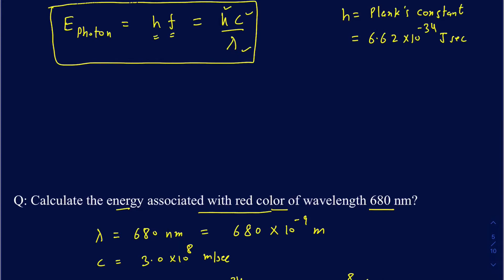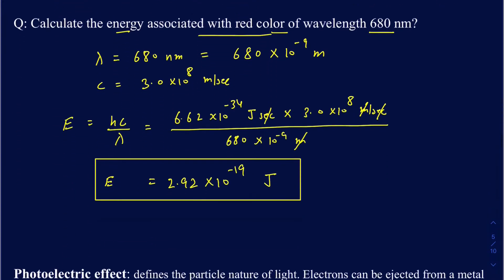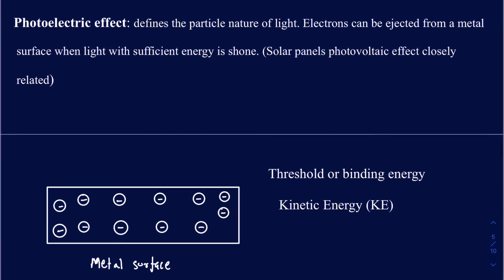Now let's move on to the photoelectric effect. The photoelectric effect defines the particle nature of light. If you shine light on a metal surface and that light has enough energy, it can excite electrons and even eject them from the metal surface. Solar panels work on a closely related principle called the photovoltaic effect — I'll explain the difference between the two.